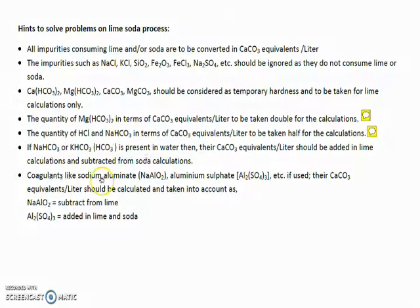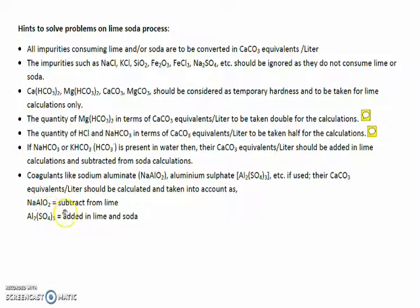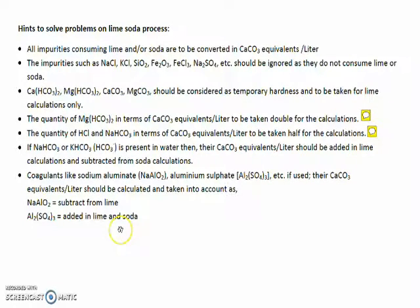Coagulants like sodium aluminate and aluminium sulfate — if used, their CaCO₃ equivalents per liter should be calculated and taken into account. Sodium aluminate should be subtracted from lime calculations, and aluminium sulfate should be added in both lime and soda calculations. Remember these rules.